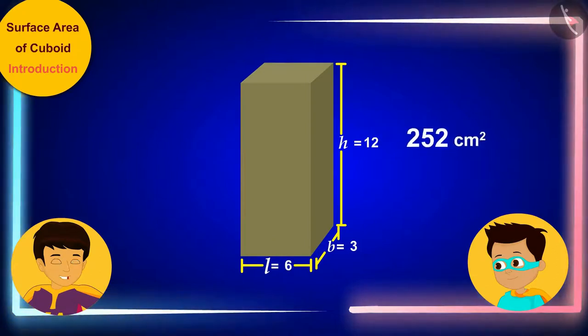We will need 252 square centimeters of paper to completely cover our cuboid box.